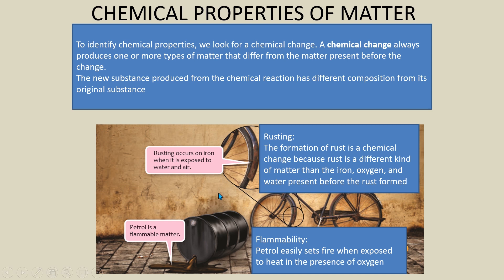Another example of chemical property is flammability. Petrol is a flammable material — it easily catches fire when exposed to heat in the presence of oxygen.